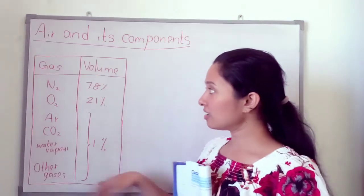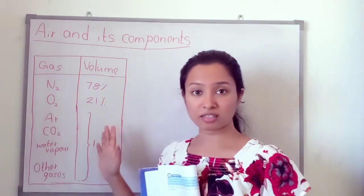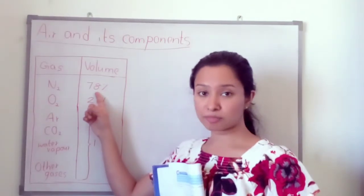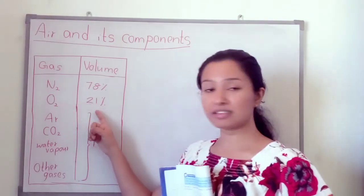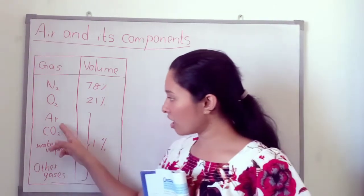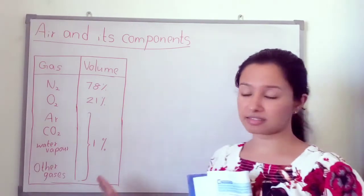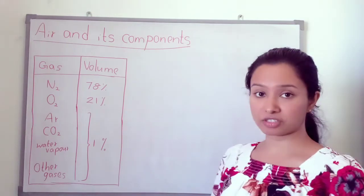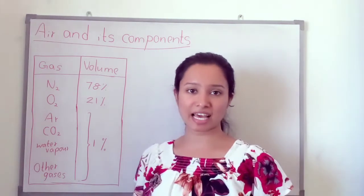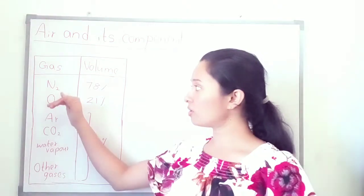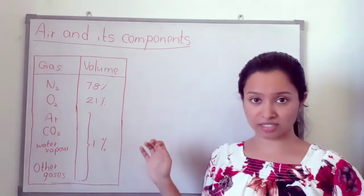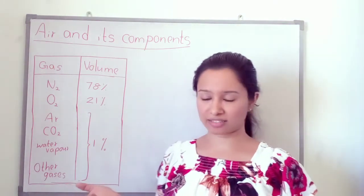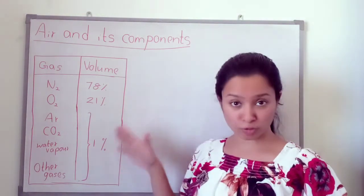Nitrogen and oxygen are the most important gases in the troposphere. Nitrogen is 78% and is the most abundant gas. Nitrogen has very low reactivity — it has very little chemical reaction with other components under atmospheric conditions.